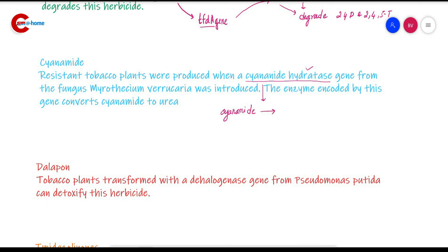Next we study dalapon. Here we can introduce a dehalogenase gene from Pseudomonas putida, which can detoxify this herbicide.